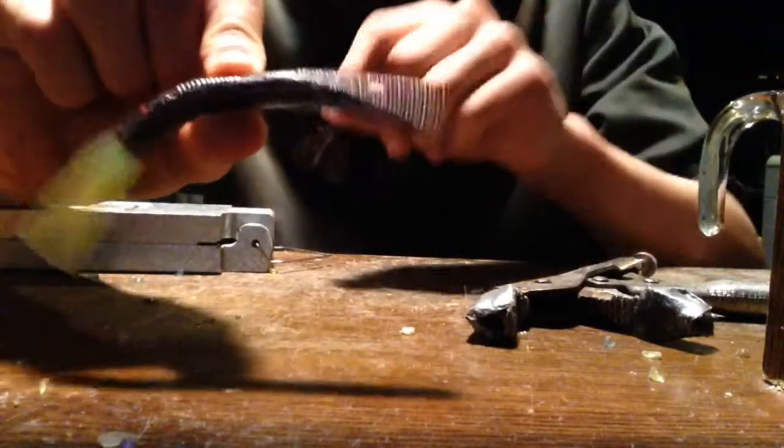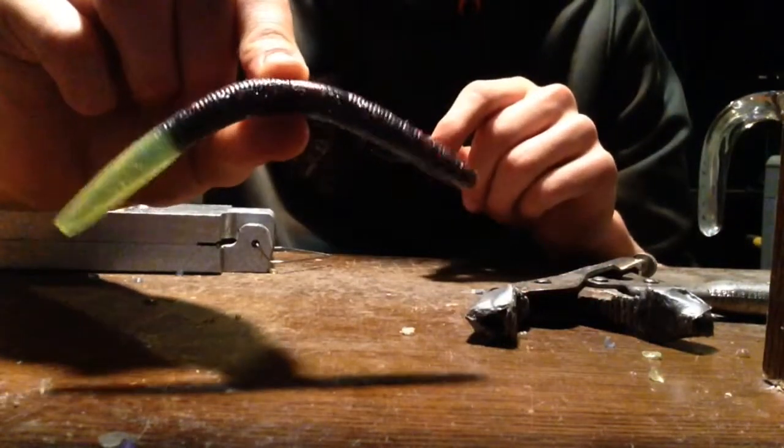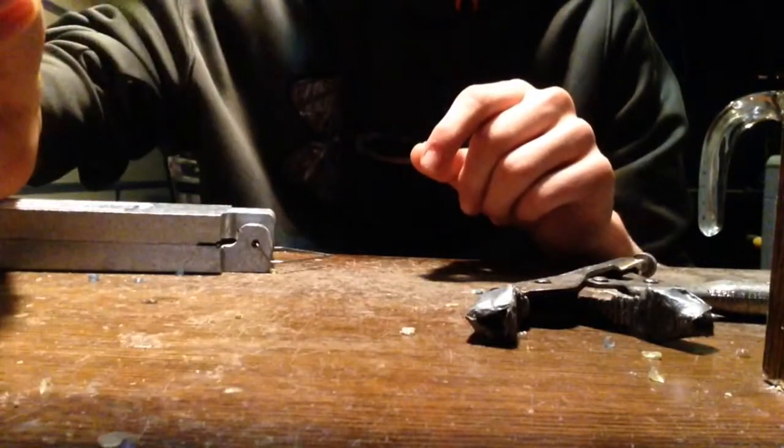In this video, I'm going to show you how I make these Senkos, which are black with chartreuse tails.